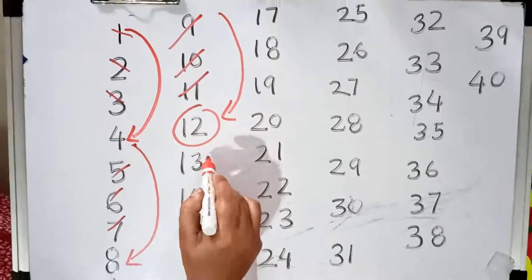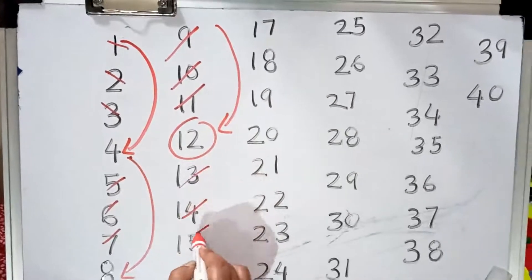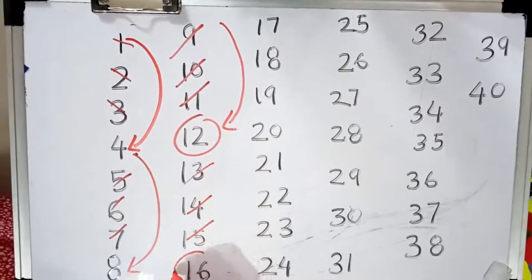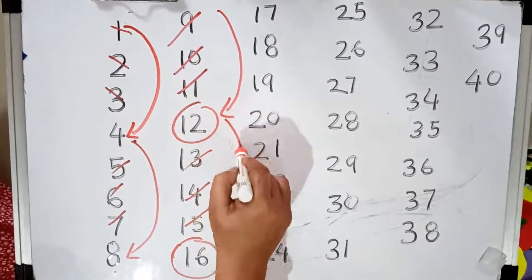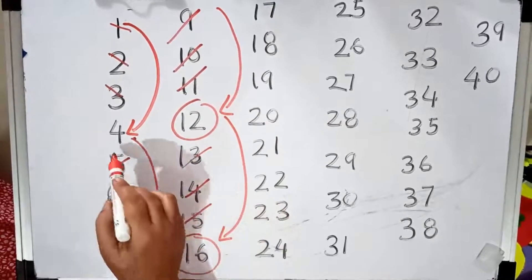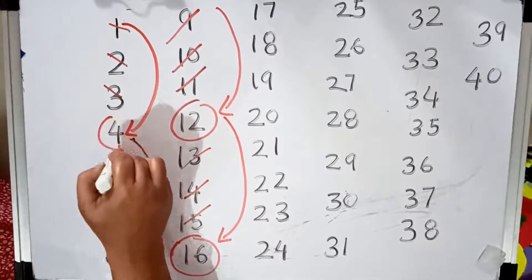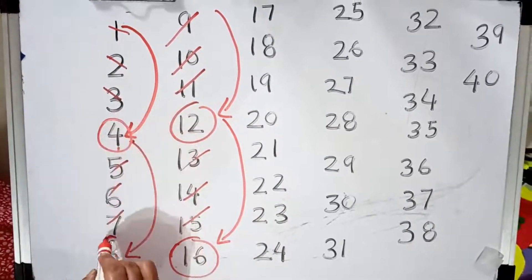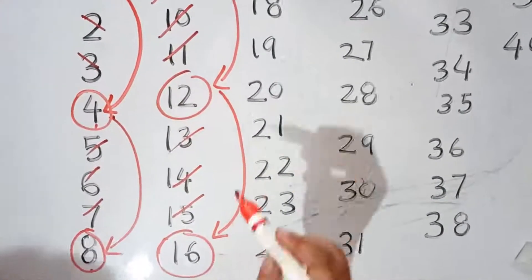So this is number 12. Now jump 3: 13, 14, 15 — the next number is 16. See, this one is 16. So we have: 4, 8, 12, 16.